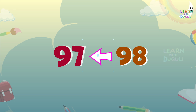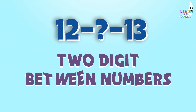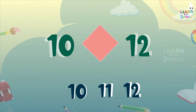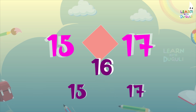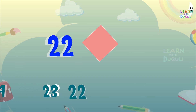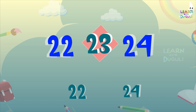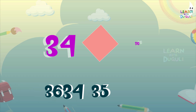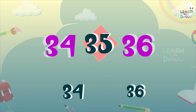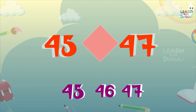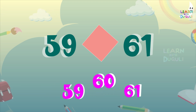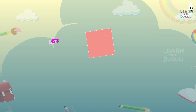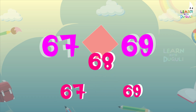Two digits between numbers. 10 and 12 — between number is 11. 15 and 17 — between number is 16. 22 and 24 — between number is 23. 34 and 36 — between number is 35. 45 and 47 — between number is 46. 59 and 61 — between number is 60. 67 and 69 — between number is 68.